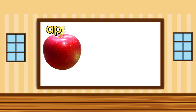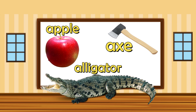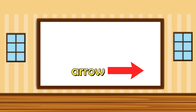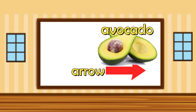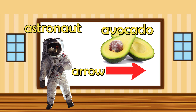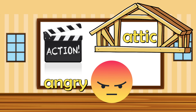A is for apple, alligator, and ax. A is also for arrow, avocado, and astronaut. A is for action, athlete, and angry.